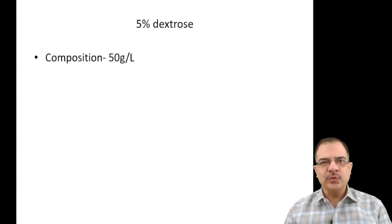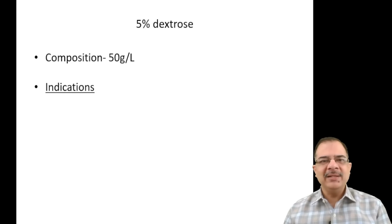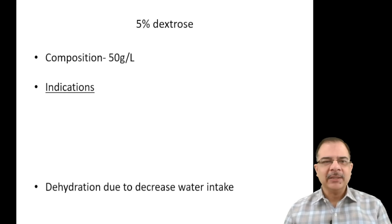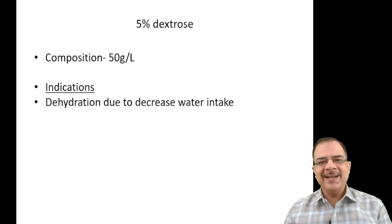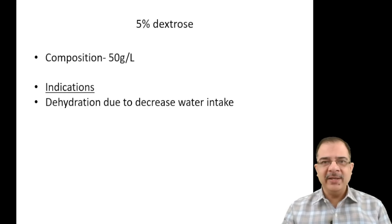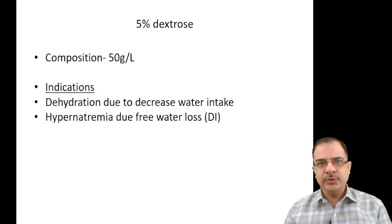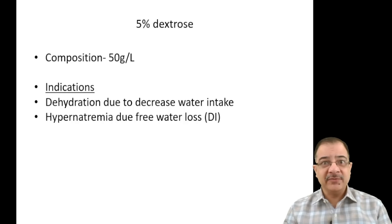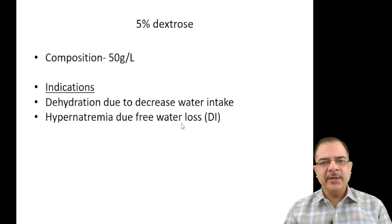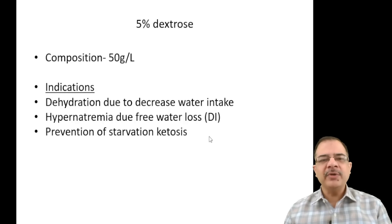5% dextrose means 5 grams per 100 ml, or 50 grams per liter. Indications include dehydration due to decreased water intake, intracellular dehydration, and hypernatremia due to free water loss. When dextrose is given, glucose is utilized by cells, leaving free water in the intravascular space, which corrects hypernatremia by providing free water without electrolytes.